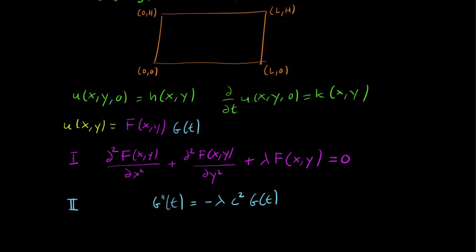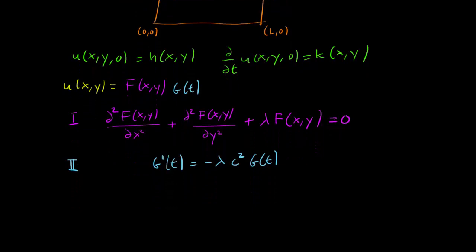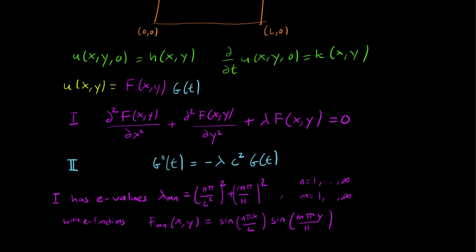Let's deal with the PDE first, and if you may recall, this is an eigenvalue problem. We have already calculated this eigenvalue problem in the previous video. We got eigenvalues lambda_mn, where lambda_mn equals (nπ/l)² plus (mπ/h)², where n and m both range from 1 to infinity. And we have eigenfunctions of the form sin(nπx/l) sin(mπy/h).